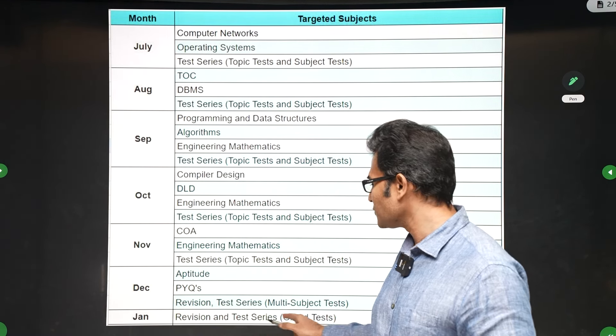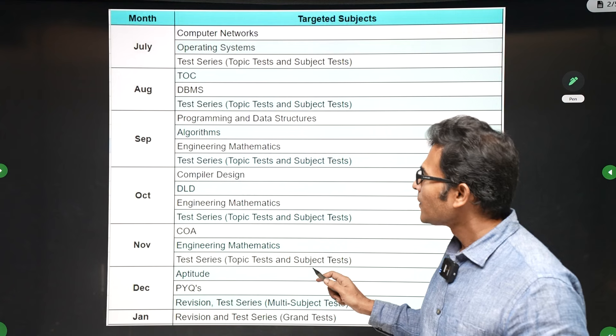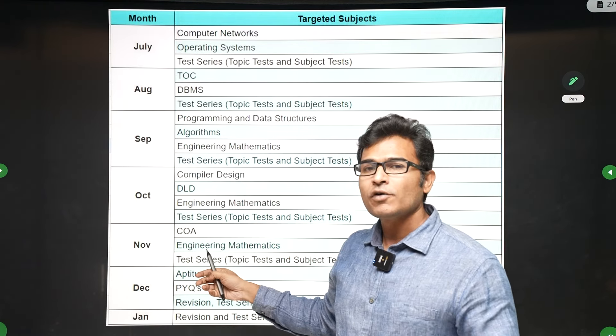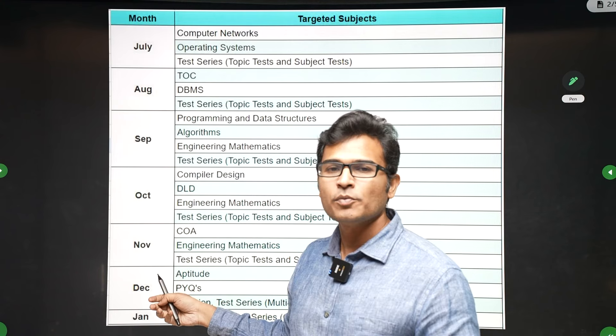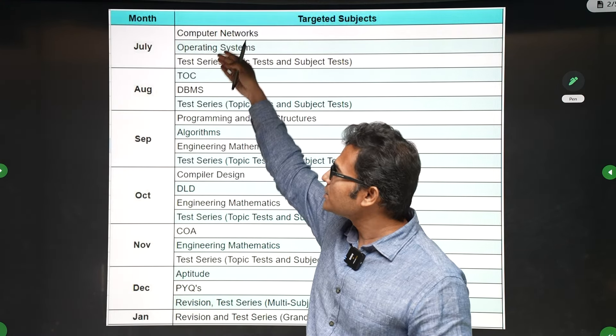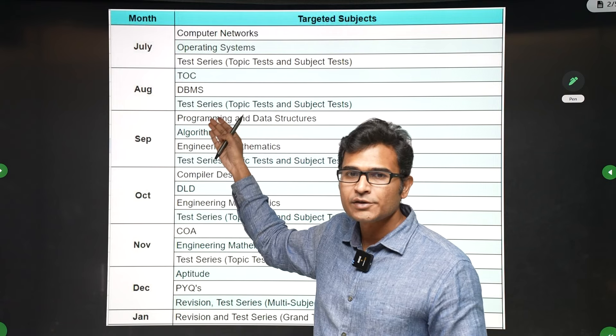Even though I am giving you a seven-month plan, our plan is to complete the syllabus by October. By October ending, we will complete the syllabus. But if you follow this plan, this is sufficient.